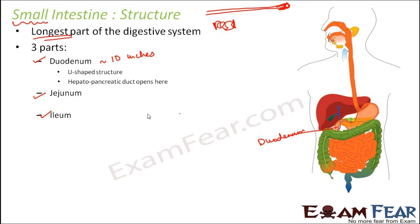The hepatopancreatic duct opens into the duodenum. All the bile from the liver and gallbladder, and all the pancreatic juice from the pancreas, come through their respective ducts which combine to form the hepatopancreatic duct. This is the common bile duct and this is the hepatopancreatic duct. All of them join together and open into the duodenum, giving their secretions to it.